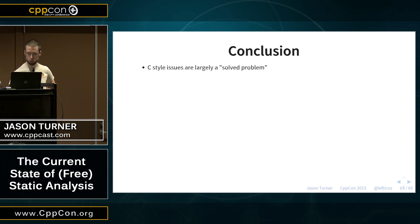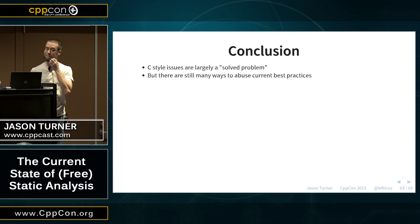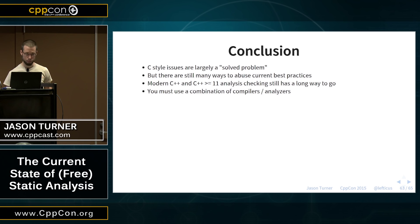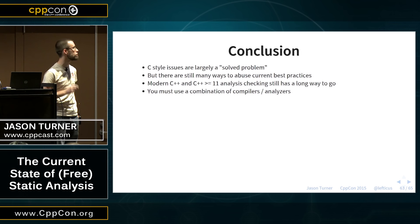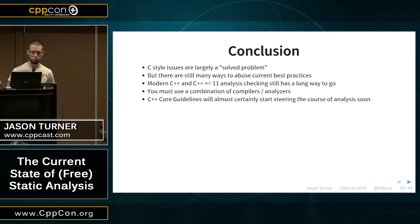In conclusion, looking at these tools, C-style issues basically come across like a solved problem — linters and static analyzers have been looking for C issues for a very long time. But there are still many ways we can abuse best practices, and specifically in C++11-related issues we've got a long way to go. You need to be in a situation where you can use as many compilers and analyzers as you can. Hopefully the C++ Core Guidelines will end up steering us in a direction where we can catch even more of these issues.